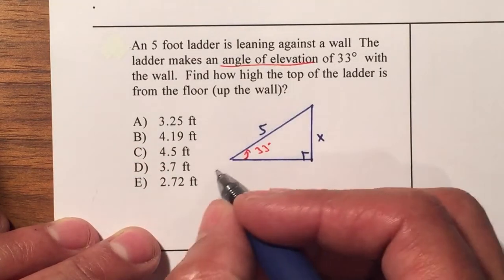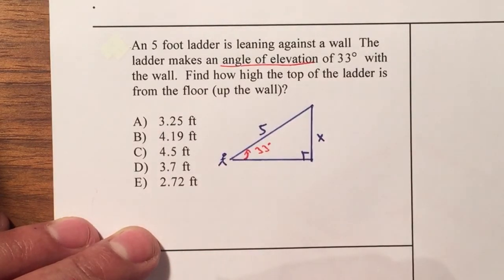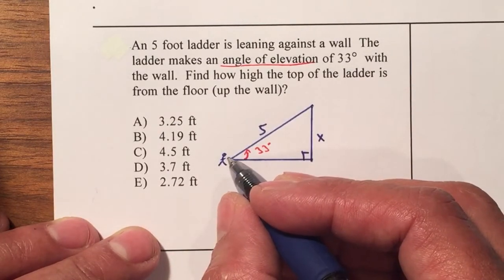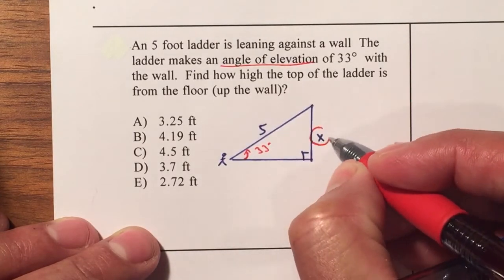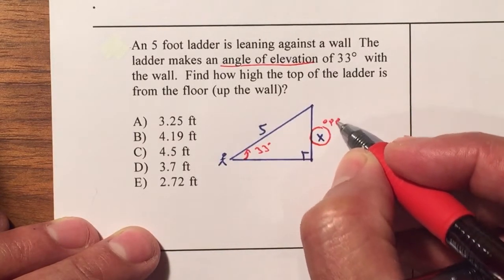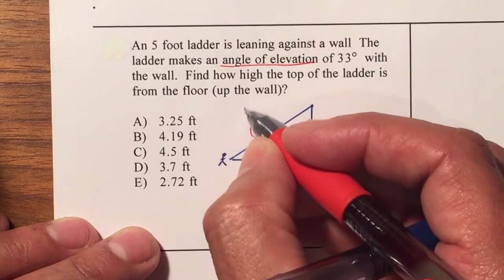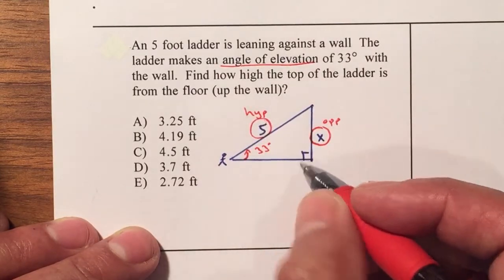So therefore we're standing at the angle that's provided for us and we're looking for X. X is your opposite and five is your hypotenuse since it's the opposite the right angle.